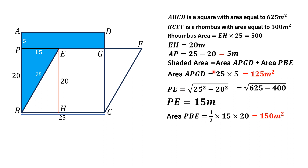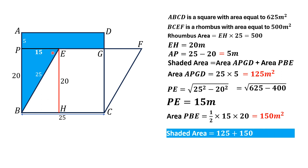Now we have to just add up these two areas to find the area of the blue shaded region. So the area of the blue shaded region is 125 plus 150, that is 275 meter square. That is the answer.